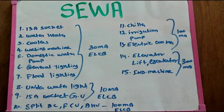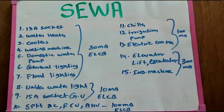Finally, we are going to look at the ELCB rating. We are going to make a socket for 30mA — for water heater, refrigerator, domestic water pump, and general lighting. We are also going to make a food lighting circuit with minimum ELCB rating, and a 15A socket outlet.